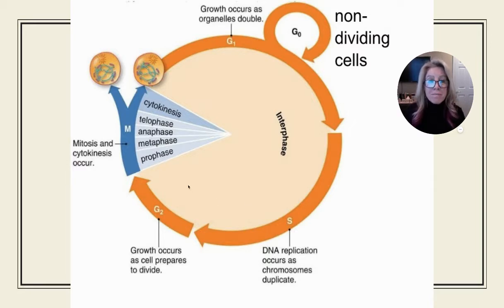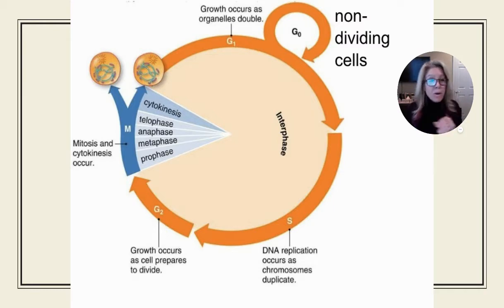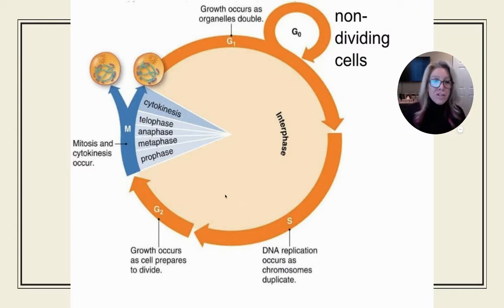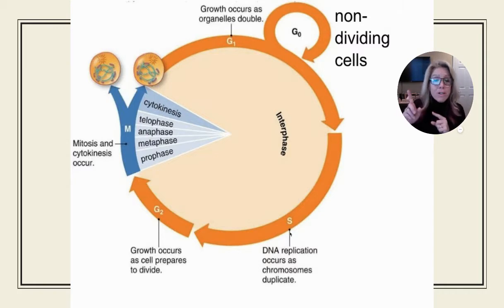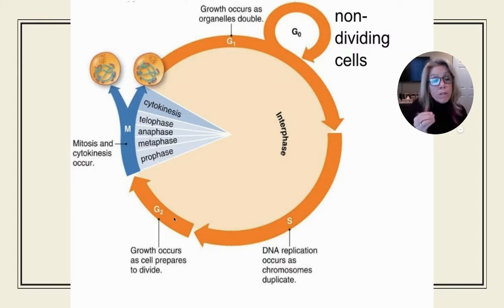Looking at the three parts of interphase — G1, S, and G2 — right at G1 there's an off-ramp called G0 for non-dividing cells. If you're done growing, cells enter G0. If you just finished cytokinesis, all your cytoplasm and organelles have been halved, so G1 is when you're making more organelles. The S stage stands for synthesis — this is when your DNA replicates to get ready for mitosis again.